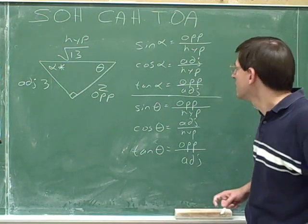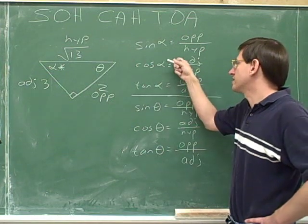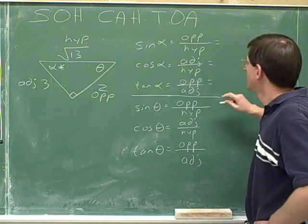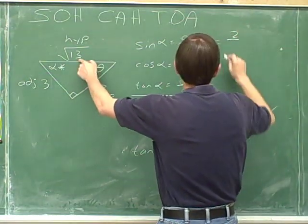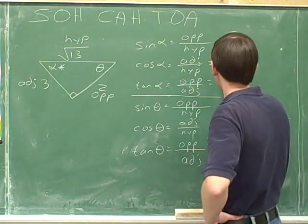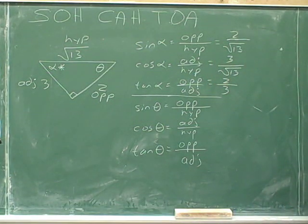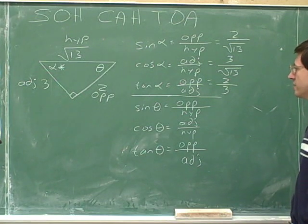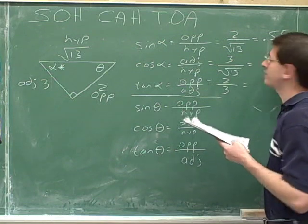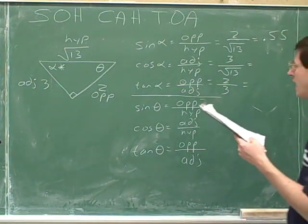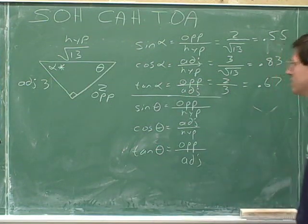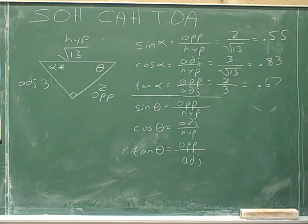Remember, every time you write one of these general formulas, mutter SOH-CAH-TOA under your breath to avoid careless mistakes. Sine is opposite over hypotenuse, cosine is adjacent over hypotenuse, tangent is opposite over adjacent. For alpha: the opposite side is 2 and the hypotenuse is √13, so the sine of alpha is 2/√13 ≈ 0.55. The adjacent side is 3 and the hypotenuse is √13, so the cosine of alpha is 3/√13 ≈ 0.83. The tangent of alpha is 2/3 ≈ 0.67.